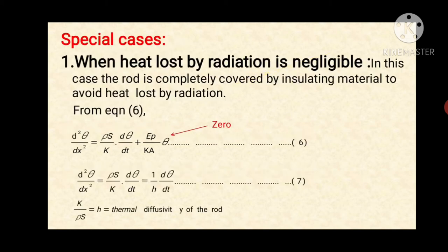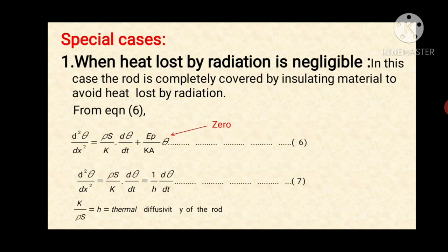Now we will see special cases. First case: when heat loss by radiation is negligible. Here the rod is completely covered by insulating material to avoid heat loss by radiation. From equation six, the term (ep/KA)·θ becomes zero. So we can write d²θ/dx² equals (ρs/K)·(dθ/dt), which equals (1/h)·(dθ/dt), equation seven. Here h equals K/(ρs), which is the thermal diffusivity of the rod.